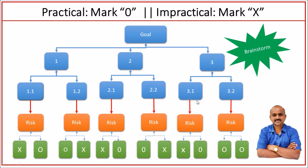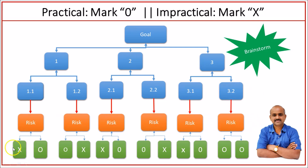This is what a PDPC chart is. At the first level, you have goals. At the second level, you have main activities. At the third level, you have a list of tasks. At the fourth level, you have potential problems or risks. At the fifth level, you have the practically possible and viable measures — a list of actions to prevent these risks from happening. This is the whole summary of a Process Decision Program Chart.